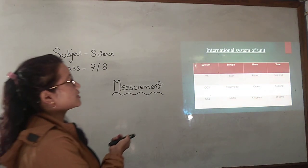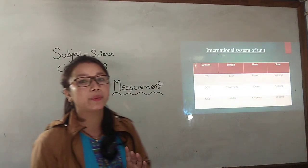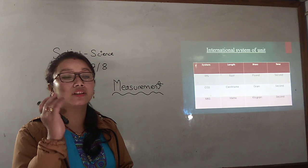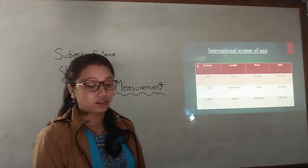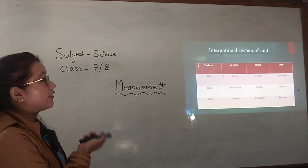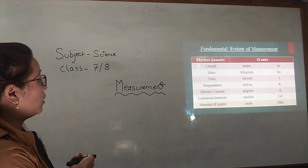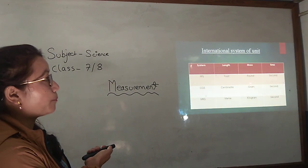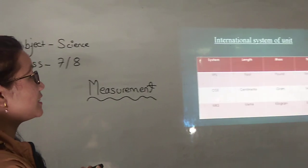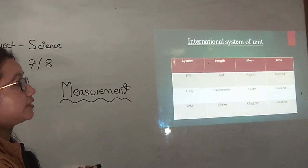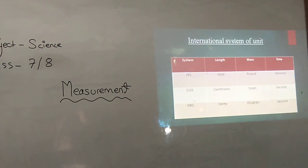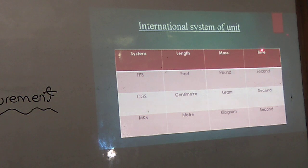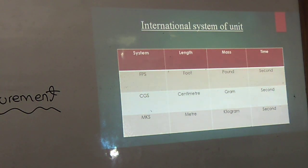Now, international system. As we know that in the ancient time people use different measurements, such as they use mana, pathi, they use their hands for measuring. So according to that there are different systems. In MKS system, length is measured in meter, mass in kilogram, and time in second. These are systems that are used.